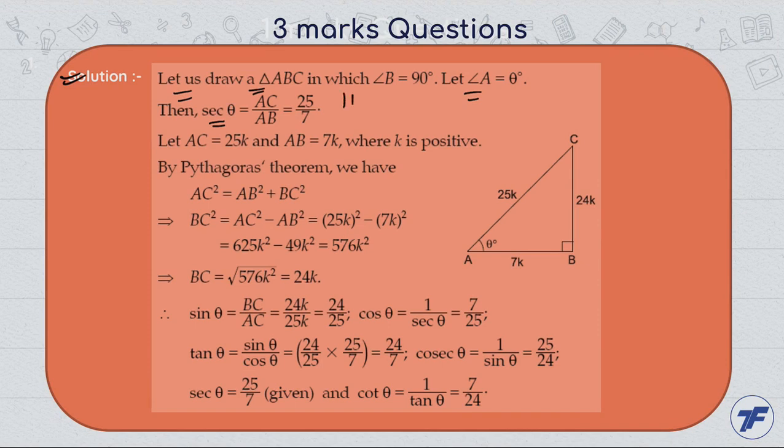Now sec θ is equal to... We know that sec θ is hypotenuse upon base. So here it's AC upon AB. We can take ratios in the form AC = 25k and AB = 7k, where k is a positive number.